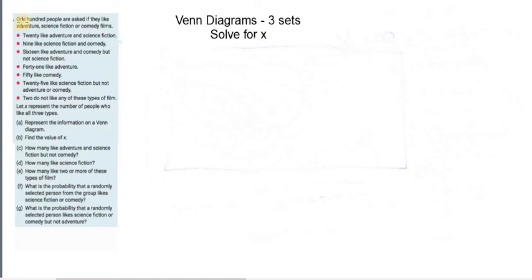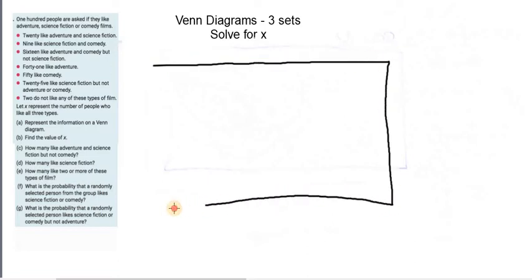So in this case we have 100 people asked if they like adventure, science fiction, or comedy films. So let's draw our box which represents the whole universe. A good big box. You can do better than this, I'm doing it freehand on a machine here, it's not that easy.